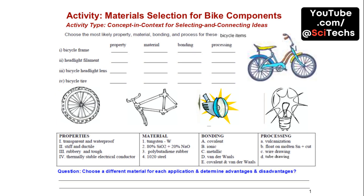Engage in an activity to select materials for bike components. Consider properties, material types, bonding, and processing methods to determine the best choices for each part.